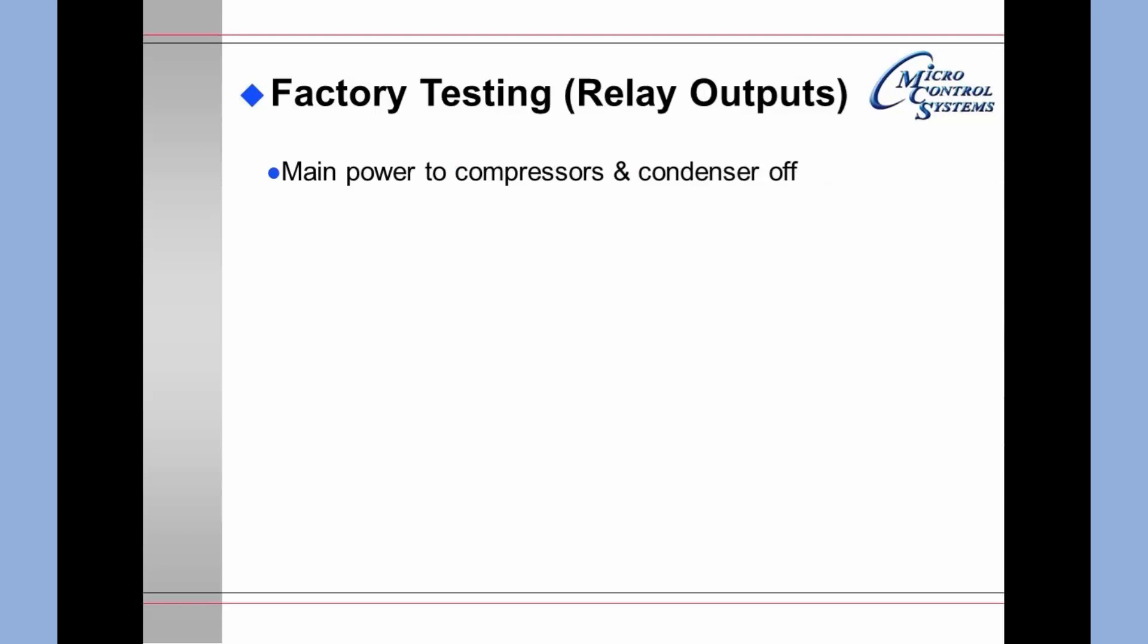During the factory testing on the relay outputs, the main power to the compressors and the condenser should be turned off. Control power to the micro and the contactors and the solenoids should be on. You may need to put together a separate extension cord type system in order to do this.